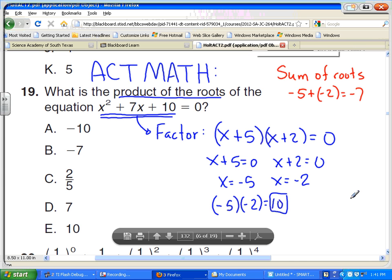Now, for any quadratic equation where you have ax squared plus bx plus c, there is a formula that says the product of the roots is c over a. In this case, a is 1, b was 7, and c was 10. And so c over a would be 10 over 1, and so the answer was 10.